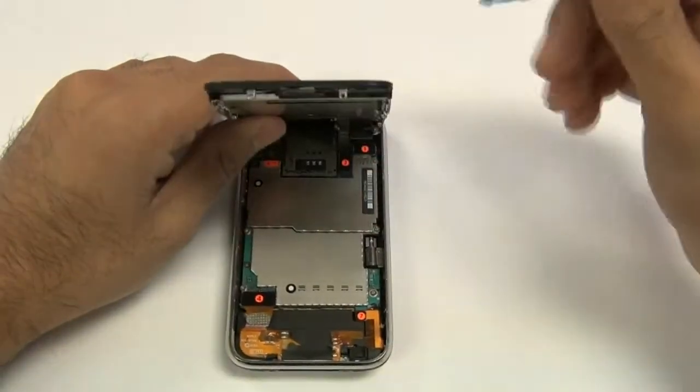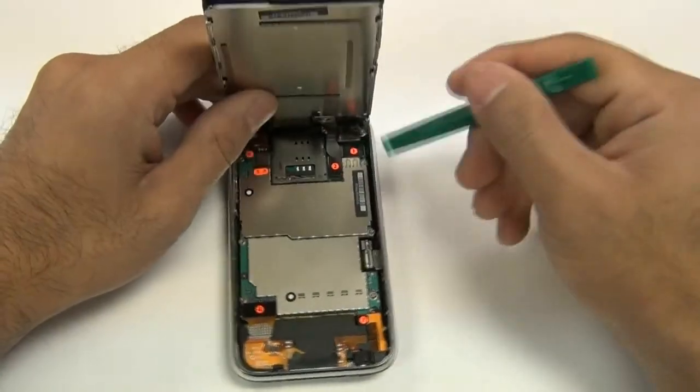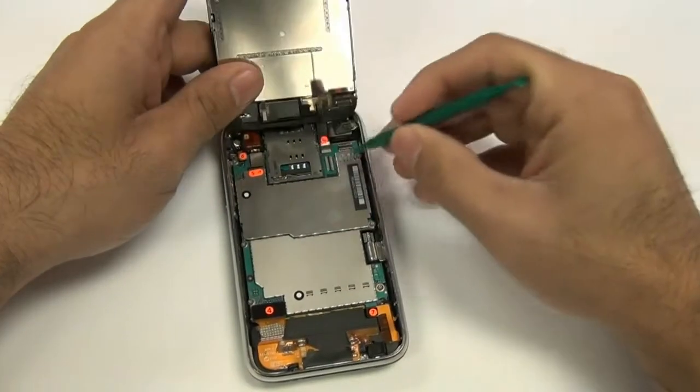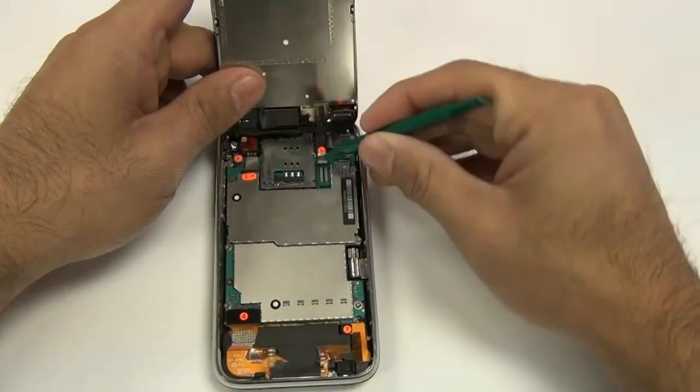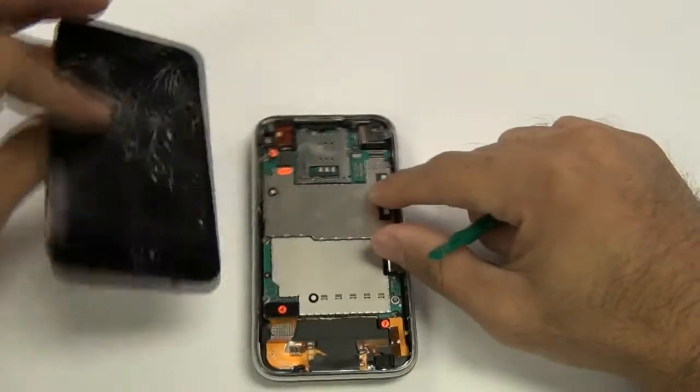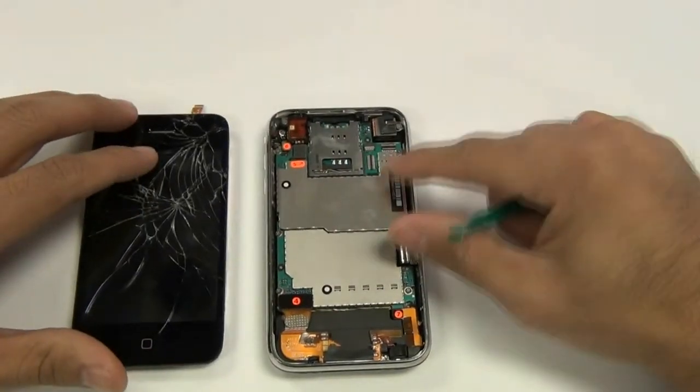Using a safe open pry tool, you will remove these cables starting with the LCD flex cable which is cable number 1, then the digitizer flex cable number 2, and cable number 3 is held in with a jawbone connector which will need to be flipped up, and then you can pull the cable out.